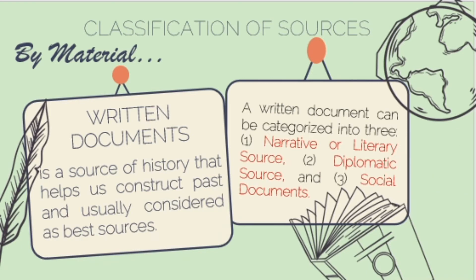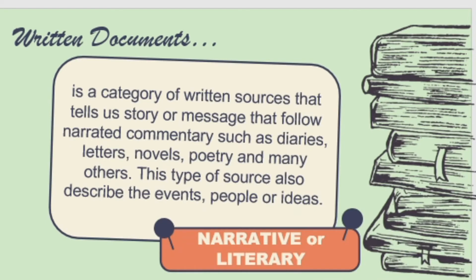The last classification of sources is according to material, and there are three types. The first is written documents. In the field of history, written documents are usually seen as the best source because there are printouts — you have concrete evidence and proof that you have a source. Written sources can be categorized into three: narrative or literary sources, diplomatic sources, and social documents. Narrative or literary sources tell a story or message through narrated commentary such as diaries, letters, novels, and poetry, and they describe events, people, or ideas.